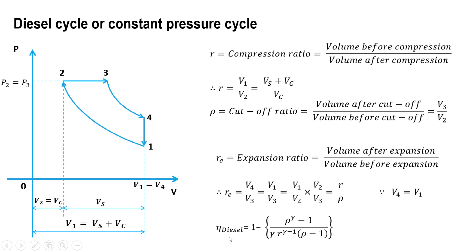The efficiency of the diesel cycle has already been derived in our earlier video. It is: 1 minus [Rho raised to gamma minus 1] divided by [gamma × R raised to gamma minus 1 × (Rho minus 1)].